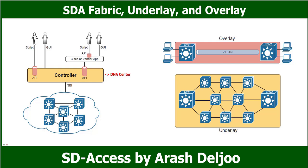It is important to understand the fundamentals of the underlay correctly. The underlay is the network of devices and connections — like cables and wireless — that provide IP connectivity to all nodes in the fabric. The goal is to support the dynamic discovery of all SDA devices and endpoints as part of the process to create overlay VXLAN tunnels.